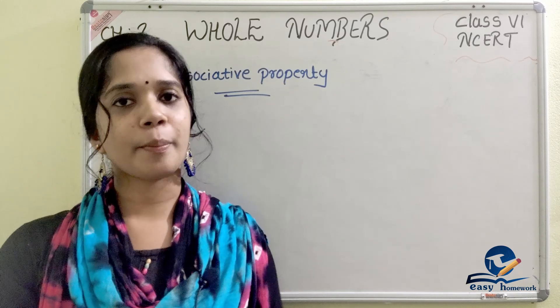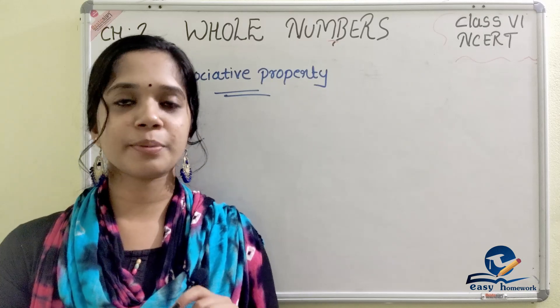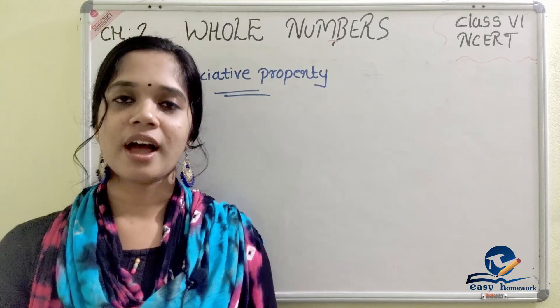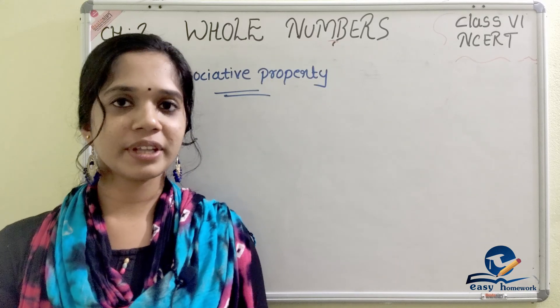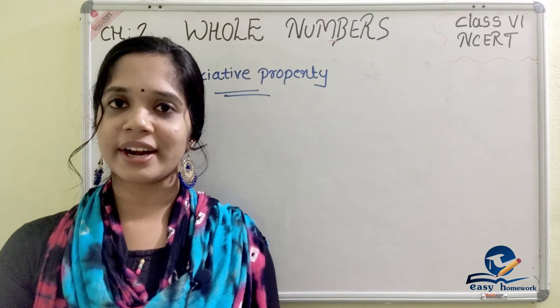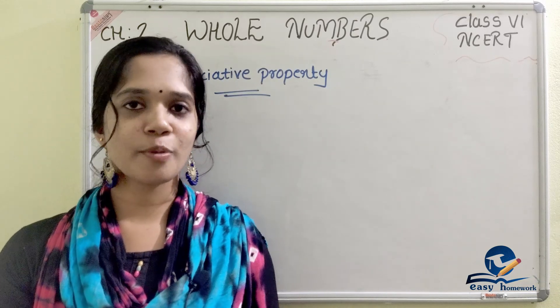We are going to learn the other properties of whole numbers — associativity and distributivity. If you have 30 properties, check the link in the description box.